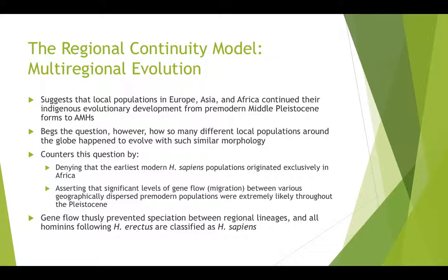One geographical area where researchers cling strongly to the multi-regional idea is China. When we talk about the earliest moderns in China, we reference questionable fossils from the Zhoukoudian cave discussed last week and some very early crania showing interesting mixes of primitive and modern traits. It is from researchers working in areas like Zhoukoudian that we find much greater support for the regional continuity model, or at least some role of East Asia in the emergence of anatomically modern humans.